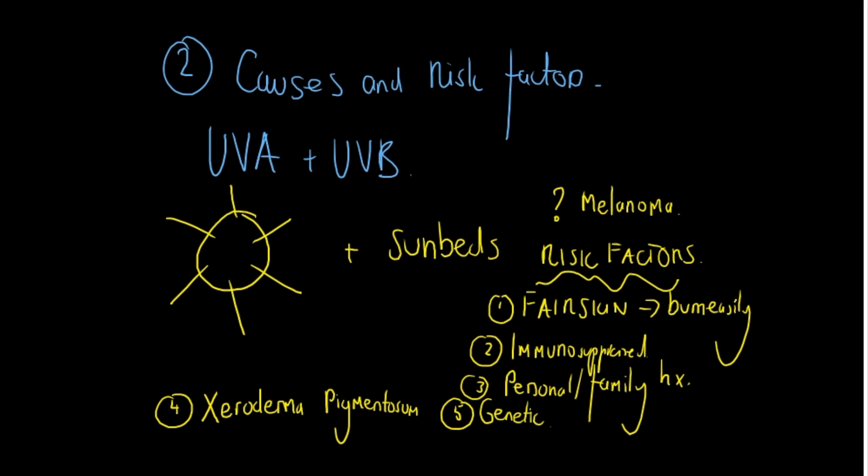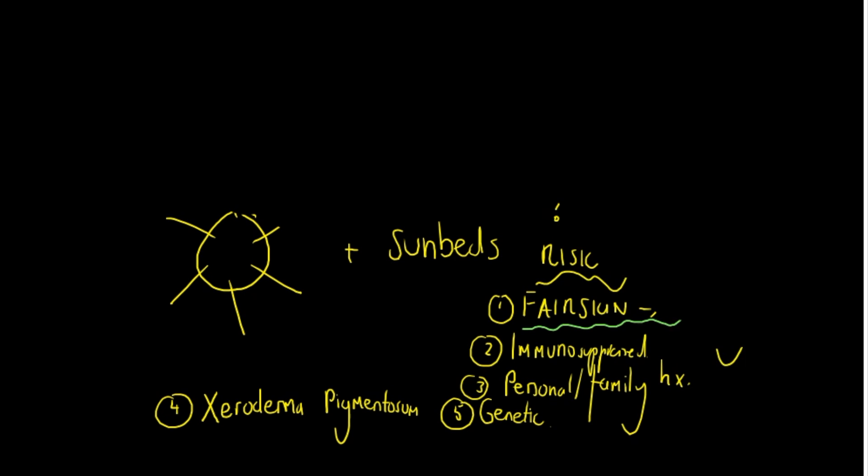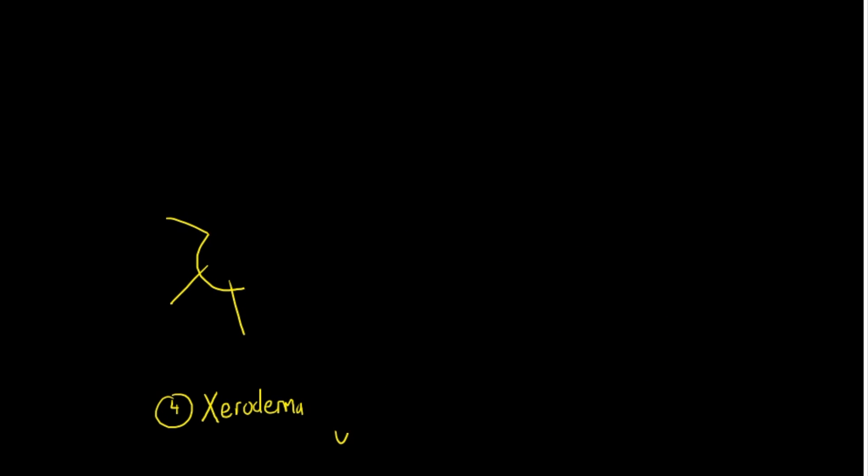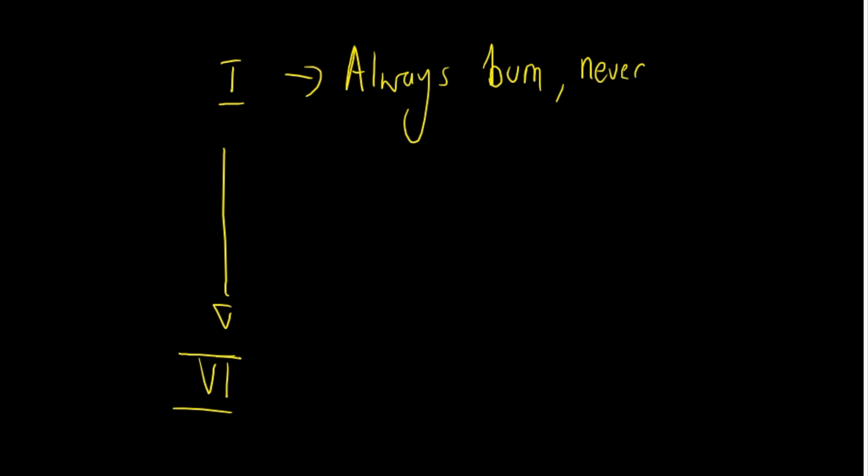Now we mentioned here that fair skin predisposes people to melanoma, and you can classify that on something called the Fitzpatrick skin type classification scale. So Fitzpatrick was a professor at Harvard who came up with a six point gradient scale ranging from one all the way through to six. Now one is that you always burn when you're in the sun but you never tan.